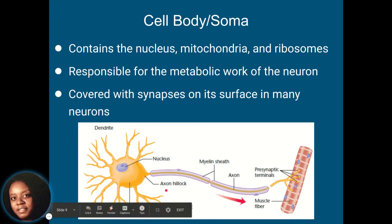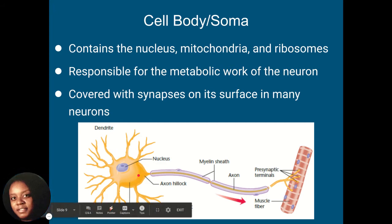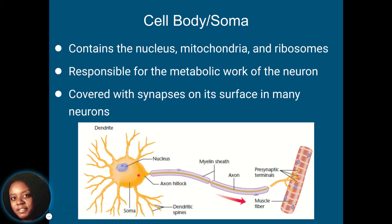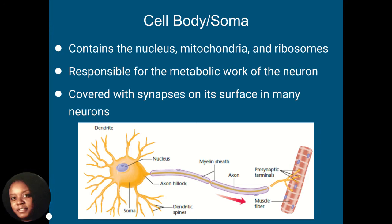After the dendrites, we look at the cell body — also called the soma. This contains the nucleus, the mitochondria, and the ribosomes, which we discussed earlier. This is where all of your metabolic work takes place. The soma or cell body is also covered with synapses on its surface and is sort of protected there within the dendrite.